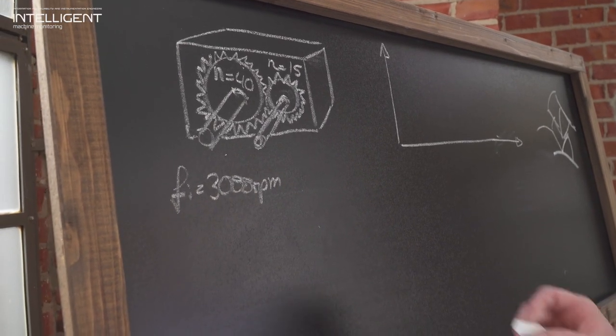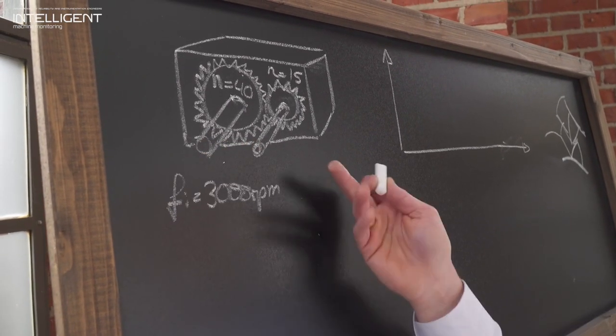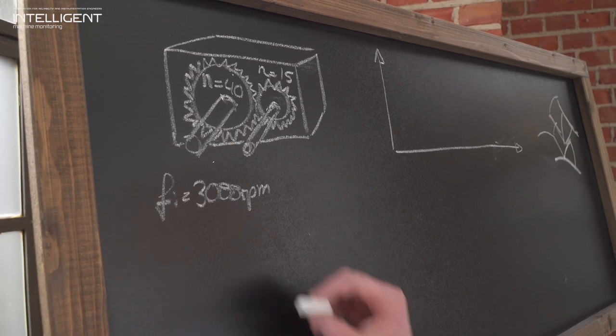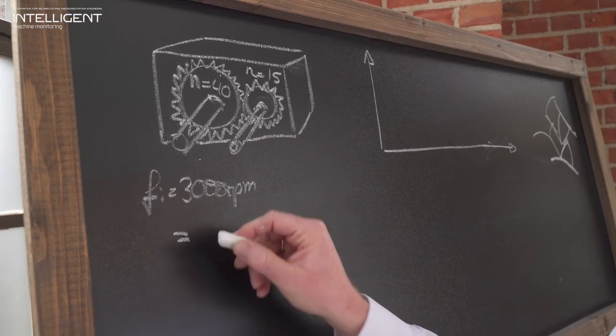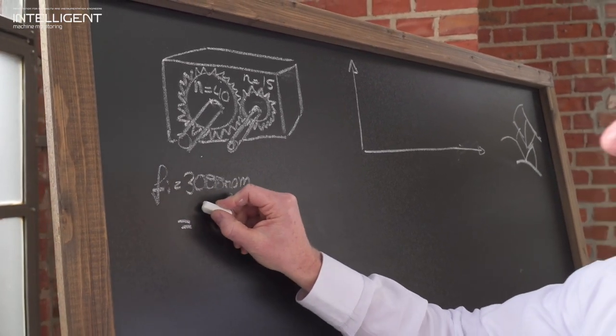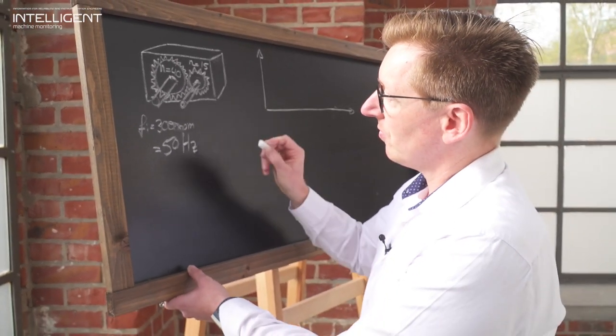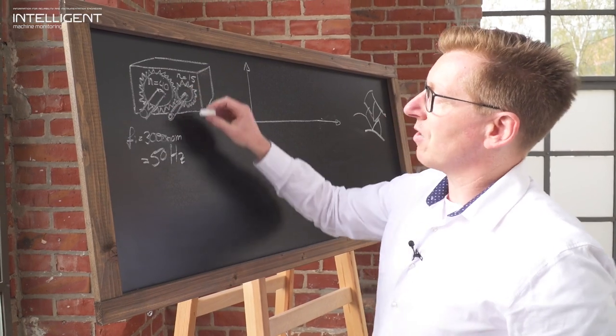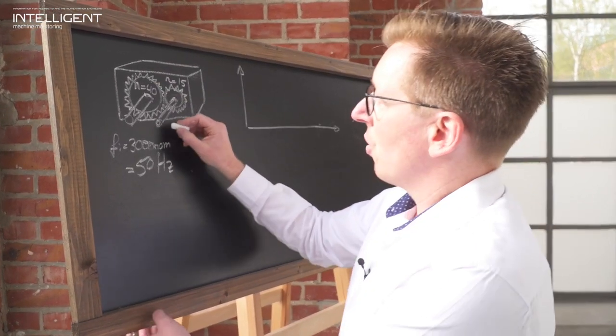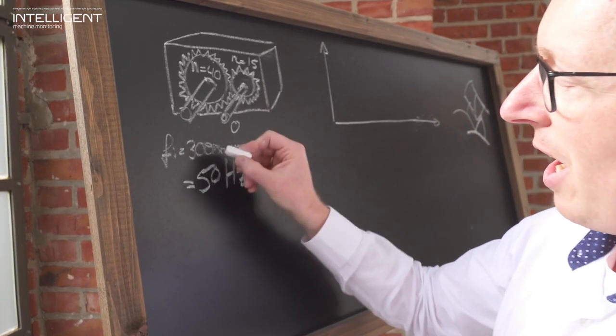In my example case with an input shaft turning at 3000 rpm, which equals 50 cycles per second or 50 Hertz. Now in my example we have a gear ratio of 40 to 15,